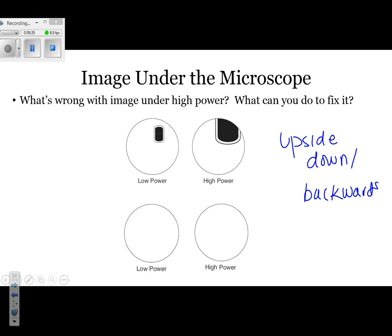When you're looking at the image, ask yourself: why is the one under high power not ideal, and what can we do to fix it? If you look at the one under low power, you can see the entire specimen, but when you look under high power, some of it gets cut off. The fix is simple — move the specimen to the middle. Once you move it to the middle, that'll ensure it stays in the field of view when you switch to high power.